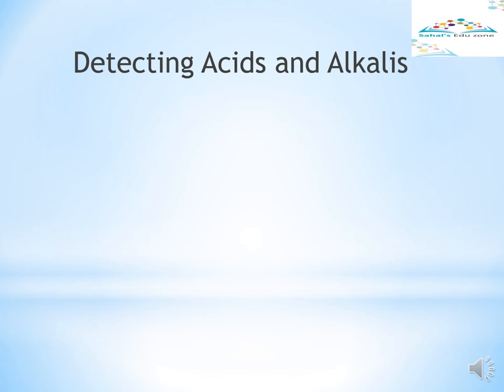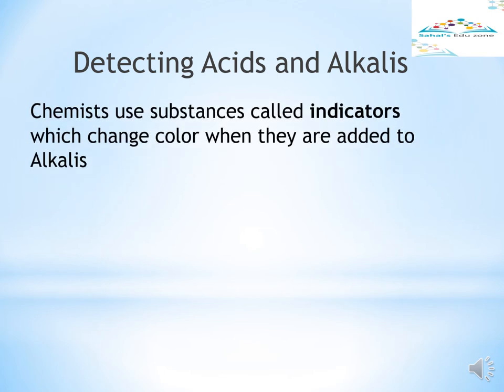Detecting acids and alkalis. Robert Boyle was an Irish scientist who lived just over 300 years ago. Robert Boyle studied acids and alkalis and decided to try and find an easy way to identify them. When Robert Boyle tested acids and alkalis with the juice from red cabbage, he found a way to identify them easily. When acid is added to red cabbage juice, it turns from purple to red. When alkali is added, the juice turns from purple to green.